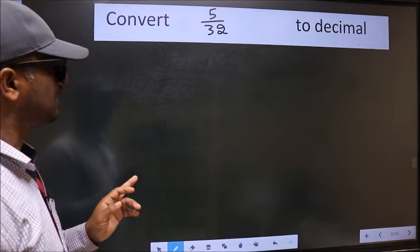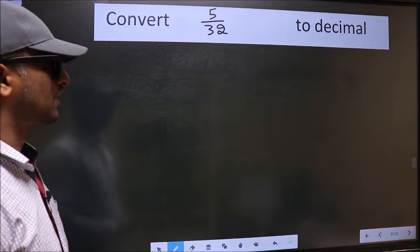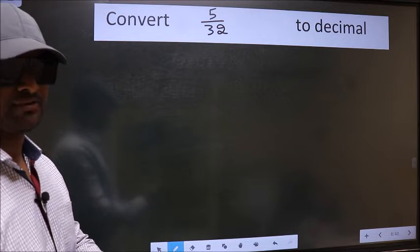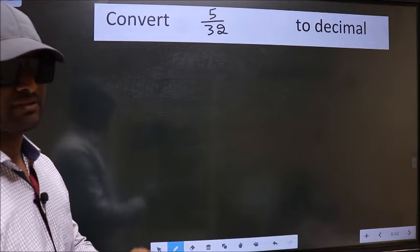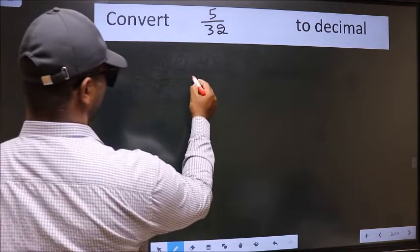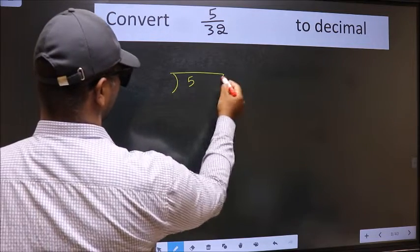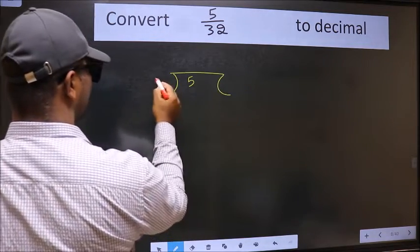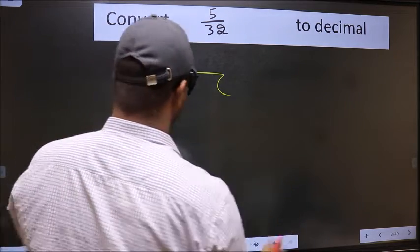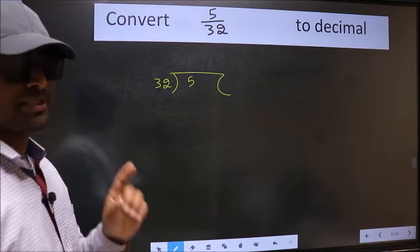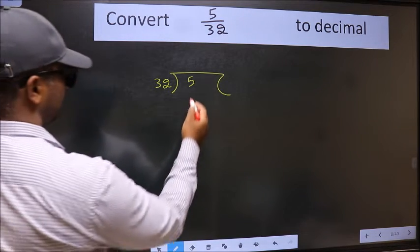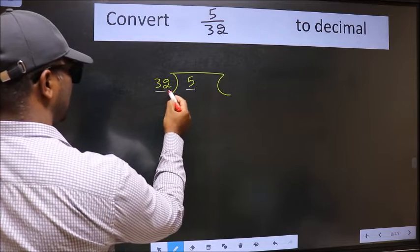To convert 5/32 to decimal, we should divide it. To divide, we frame it with 5 here and 32 here. This is step 1.